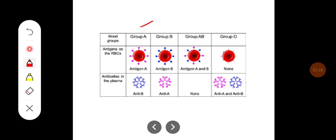Here are the antigens and antibodies of the ABO blood group system. In blood group A, they have antigen A and antibodies against B. In blood group B, they have antigen B on their RBC membrane and antibodies against antigen A in the serum. In blood group AB, they possess both antigen A and B and do not have any antibodies. In blood group O, the RBC membranes have no antigens but they possess both antibodies — anti-A and anti-B.